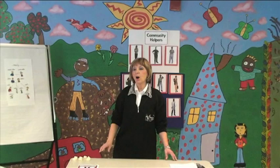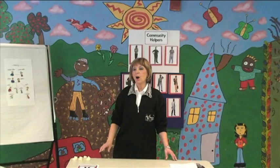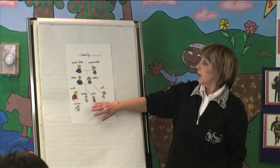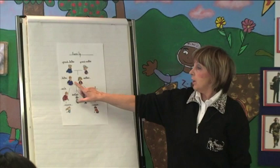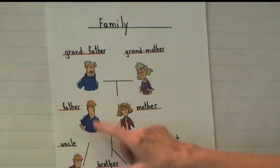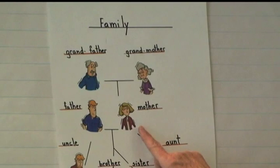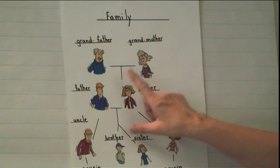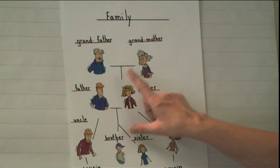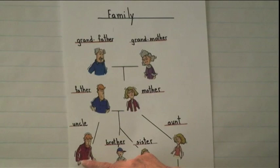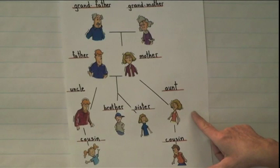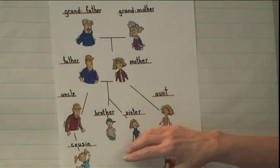Good morning, boys and girls. Good morning, Mrs. Liske. Today we are going to begin by going over the family theme that we learned a couple of lessons ago. I would like to refer to this chart and go over the family members we have learned. Here we have a father and a mother. Your father's father is your grandfather, and the same goes for your mother's father. Your father's mother is your grandmother, and your mother's mother is also your grandmother. Your father may have a brother — that would be your uncle — or a sister, which would be your aunt. That also refers to your mother's side.